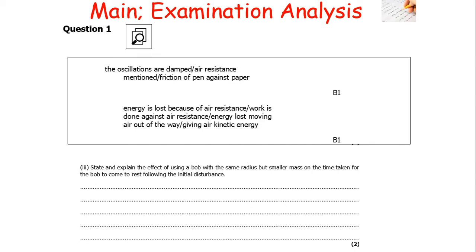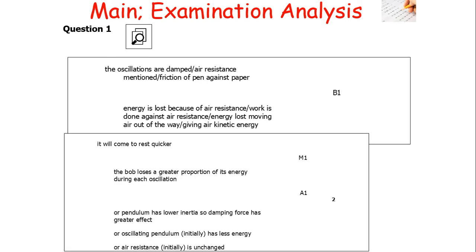The question asks about the effect of using a bulb with the same radius but smaller mass on the time taken for the bulb to come to rest. Mass doesn't affect the time period equation, but it does affect the inertia of the object since inertial mass is the main determinant of inertia. Therefore the bulb will come to rest quicker because it has lower inertia so the damping force has a greater effect. Alternatively, it has less energy stored in it, or it loses a greater proportion of its energy during each oscillation.